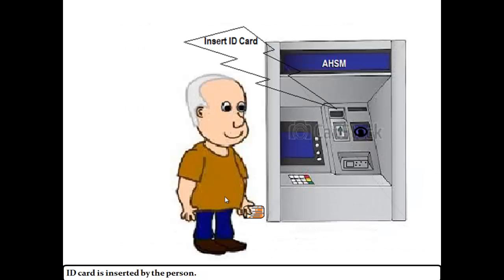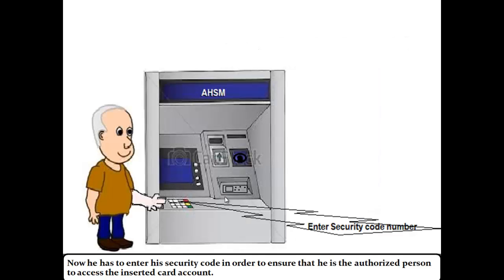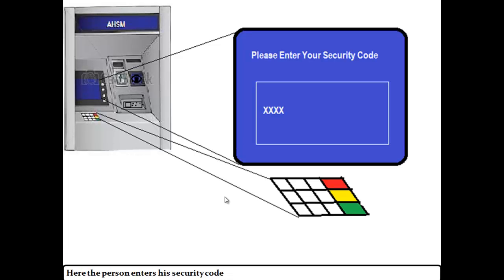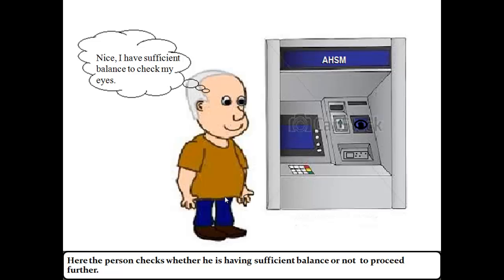The person inserts the ID card and then enters his security code in order to ensure that he is the authorized person to access the inserted card. To enter the security code, a keypad is used and a touch screen monitor is used to verify the entered code and for display purpose, as shown in the above figure. The person enters his security code.